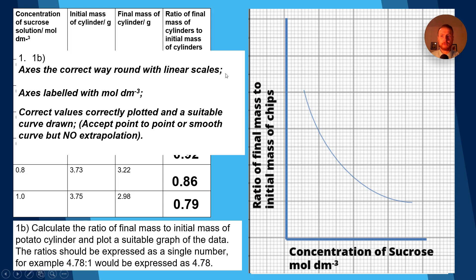Now this is what the mark scheme had to say. Axes needed to be the correct way round with linear scales. The axes needed to be labeled with moles per decimeter cubed, which is taken from the table, and correct values needed to be correctly plotted. Well in my example here we can't really see that, but just make sure your values are correct. And also a suitable curve needed to be drawn. Now point to point would have been fine, or a smooth curve like I've got on the board, but no extrapolation. So what that means is if it's not a data point, don't extend the curve past the data you've actually got, because we don't know what would have happened at those points.